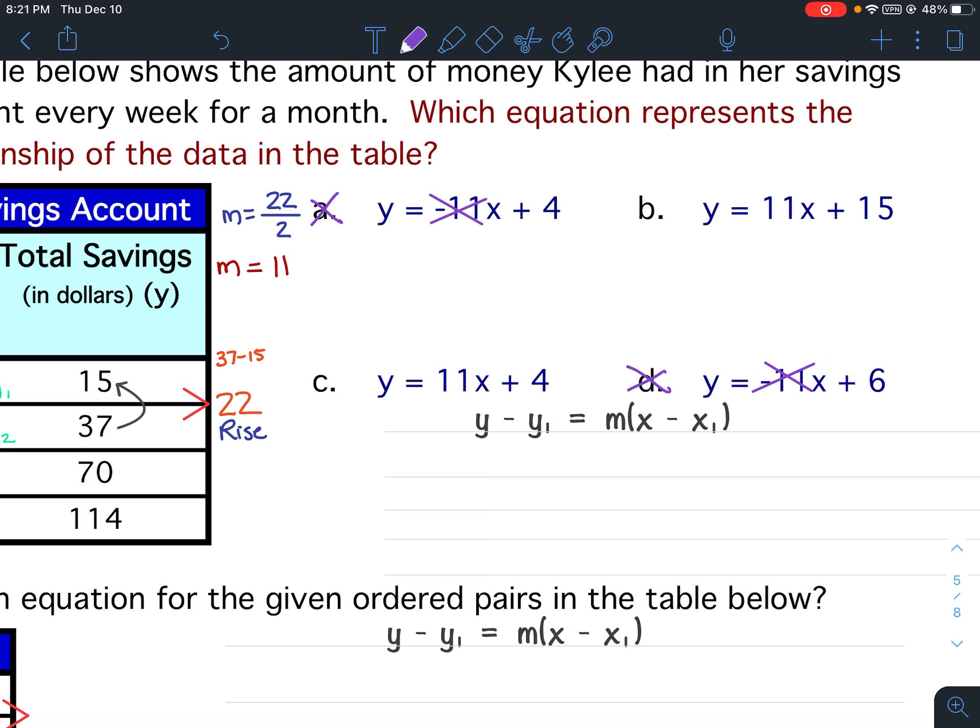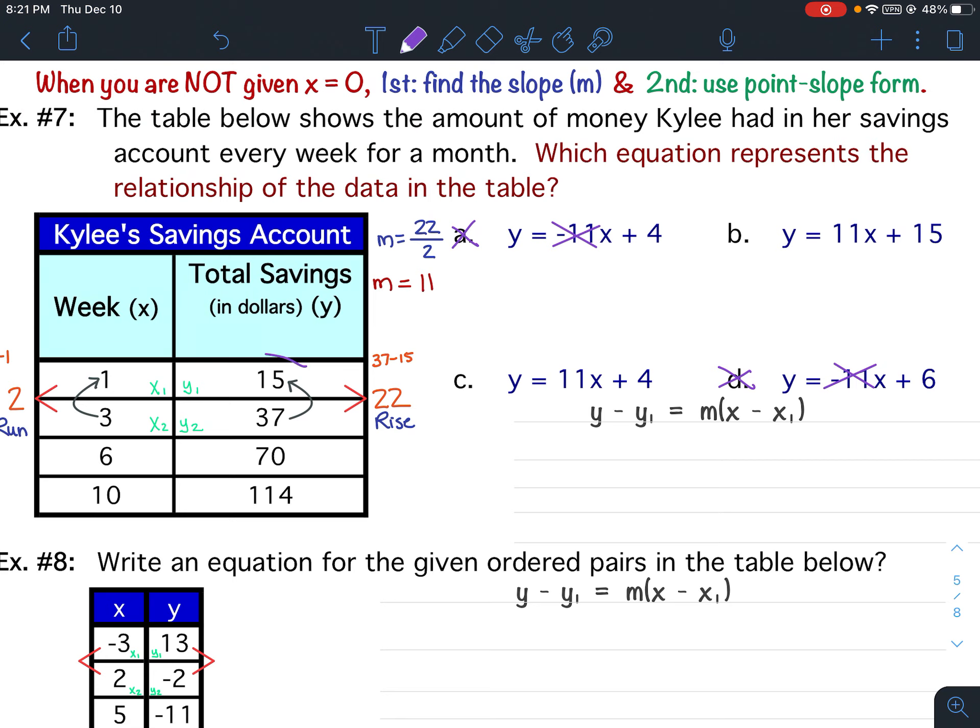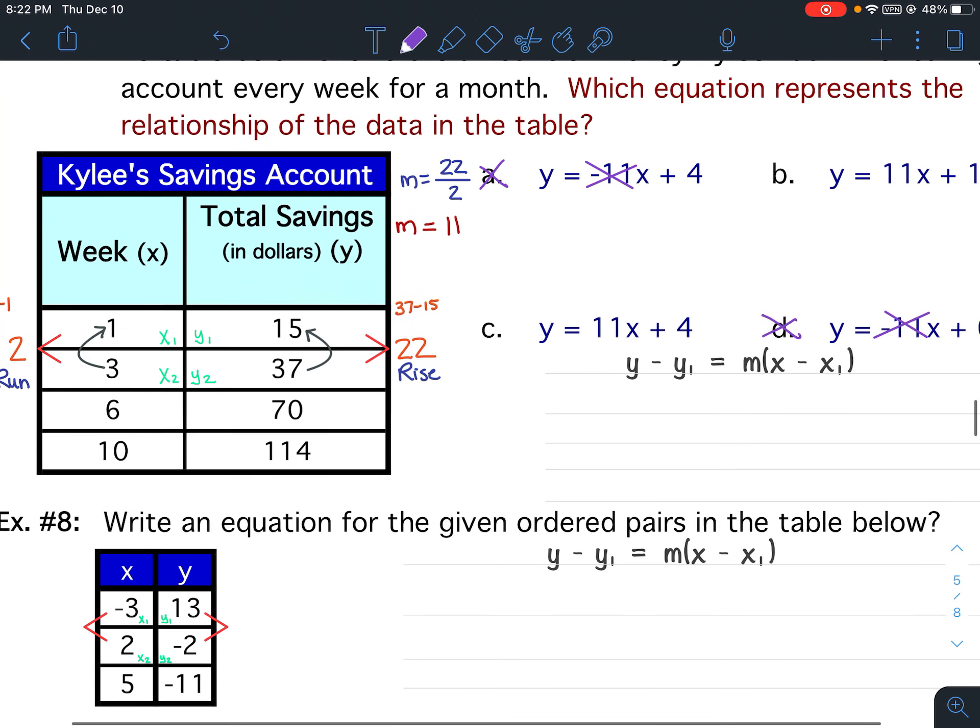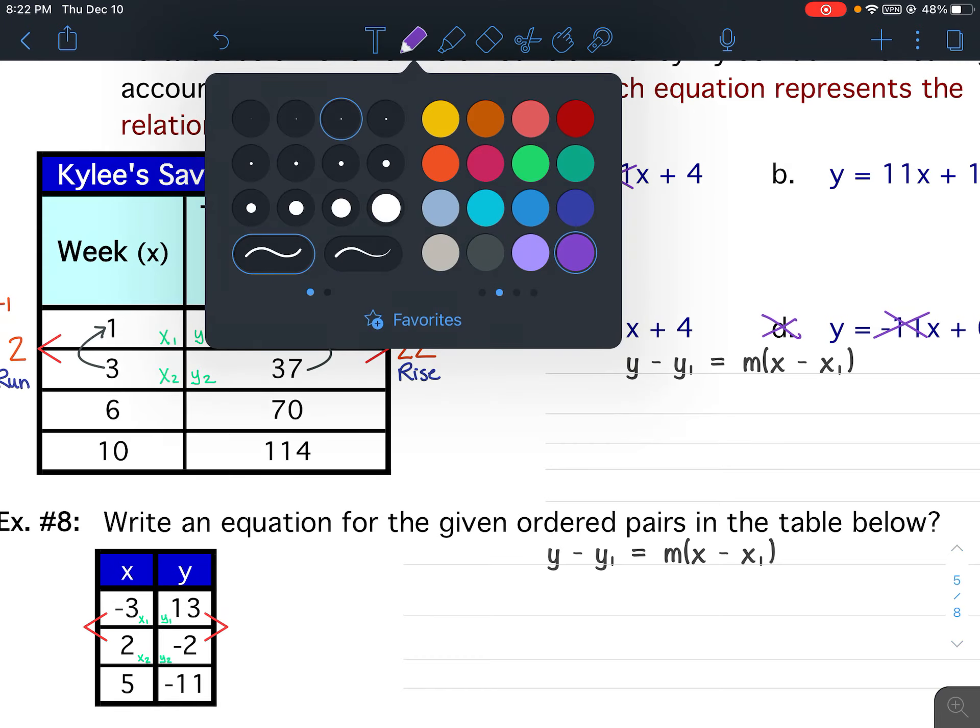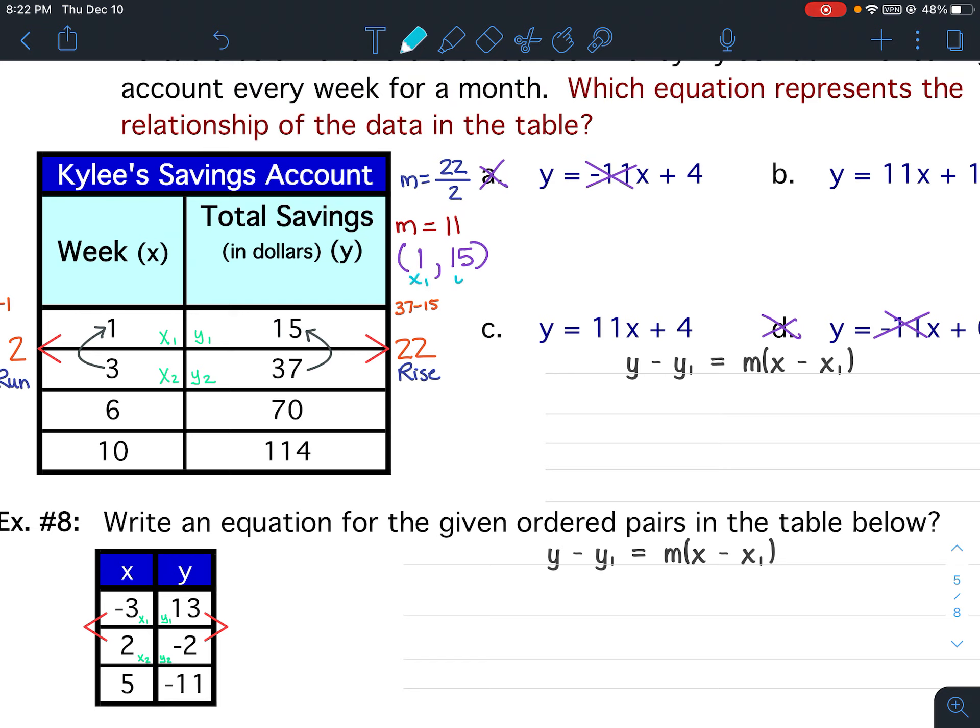But to continue, I need to take my x1, y1 and my slope and plug them into the formula to find my equation. All right. So my slope is 11. Let's go ahead and put our x1, y1 here. So x1 is 1. Y1 is 15. So this would be x1, y1. So this information right here is what we're plugging into this equation there.